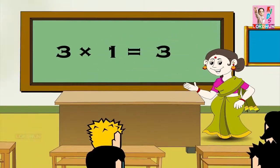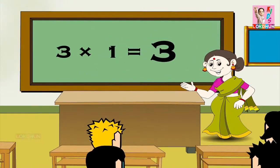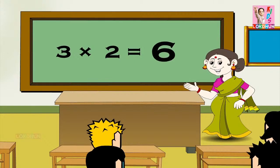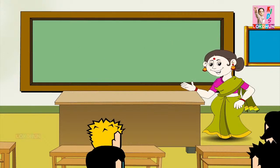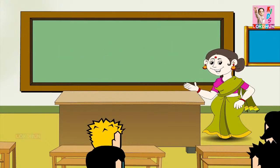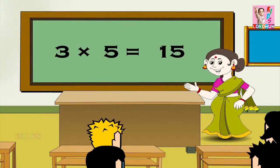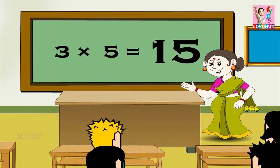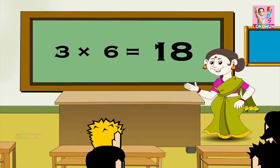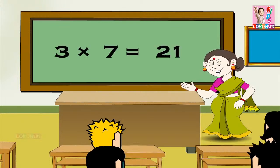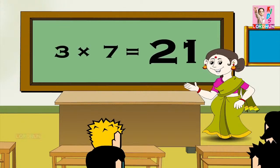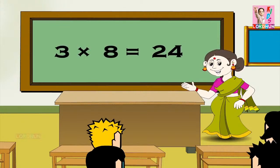Three ones are three, three twos are six, three threes are nine, three fours are twelve, three fives are fifteen, three sixes are eighteen, three sevens are twenty-one, three eights are twenty-four.